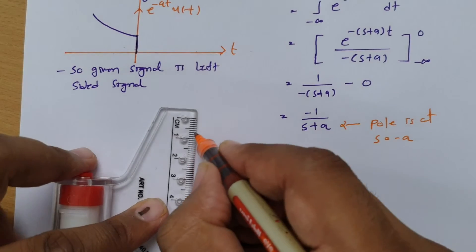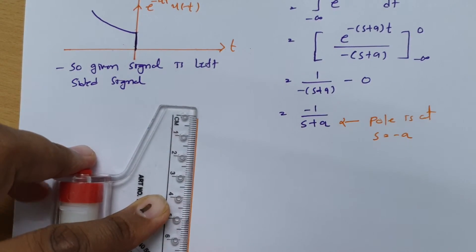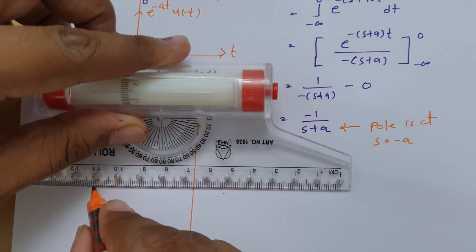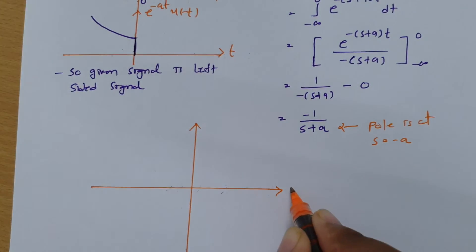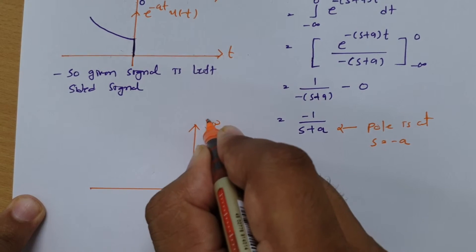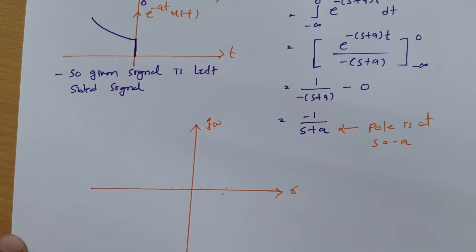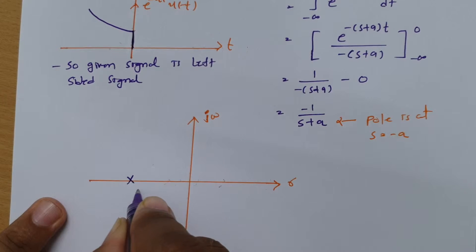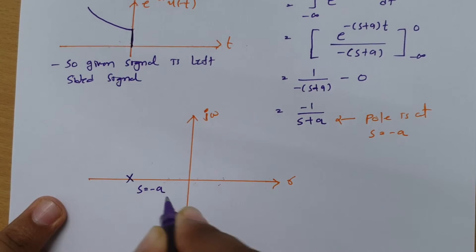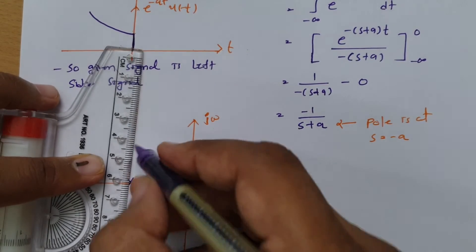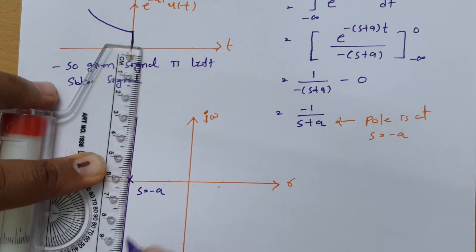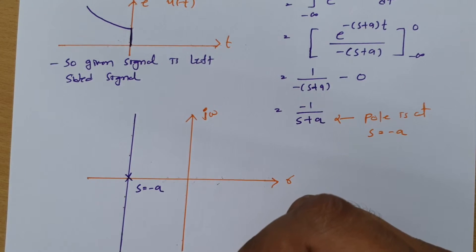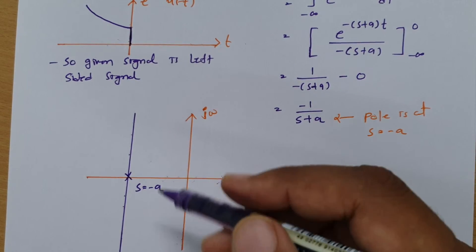Now let us plot the ROC. To plot ROC, here we have the real axis, here we have the imaginary axis. The position of the pole is happening at s equals minus a, so I am plotting it at s equals minus a. I need to draw a parallel line to the imaginary axis, so this is the parallel line to the imaginary axis.